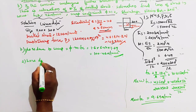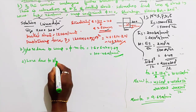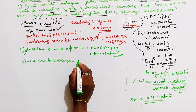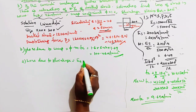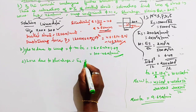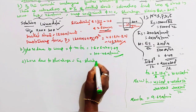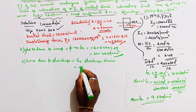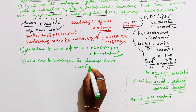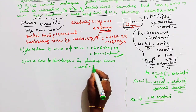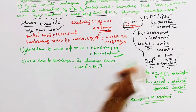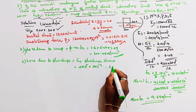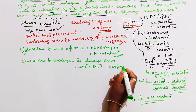Second loss: loss due to shrinkage = modulus of elasticity of steel × shrinkage strain = ES × εsh = 2 × 10⁵ × 3 × 10⁻⁴ = 63 Newton per mm square.